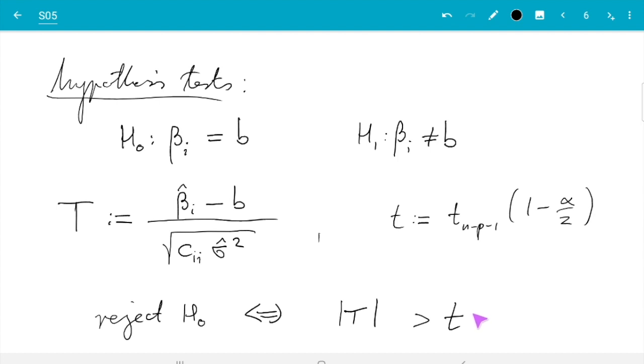So for tests, we at beginner level at least only consider what's called the type 1 error. The type 1 error is when H0 is true, the hypothesis, and the test accidentally rejects it. That's one of the two errors, the other is H1 is true and the test accepts H0. But we are only considering type 1 error.